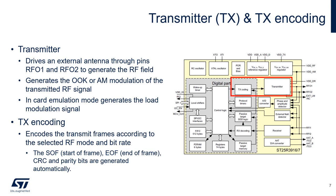The transmitter block provides several key functions to the operation of the IC. First, it drives the antenna that produces the RF field that powers up the tag. It generates the modulation of the RF signal that provides communication to the tag. And finally, it generates the load modulation needed for card emulation. In front of the transmitter block is the TX encoding block. This block generates the start of frame, end of frame, and CRC, and encodes them according to the desired RF mode and bitrate.